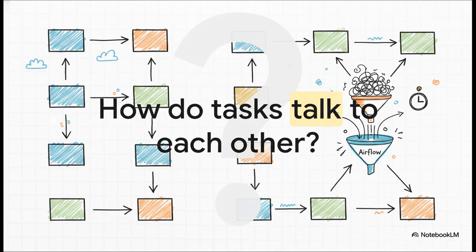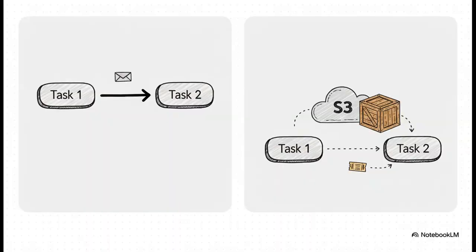If each of our Python functions is its own separate task, how do they pass information back and forth? How does the output from task 1 become the input for task 2? The answer is a feature called XCOMs, short for Cross-Communication. Here is the golden rule: XCOMs are only for small bits of information — things like a file name, a record count, a status update. If you need to pass a giant data frame or a huge file, save that file to external storage like S3, and then just pass the path using an XCOM. It's like mailing someone the key to a house, not trying to mail the entire house.